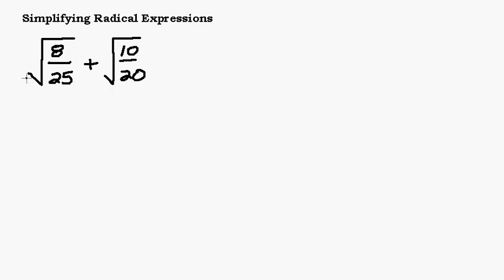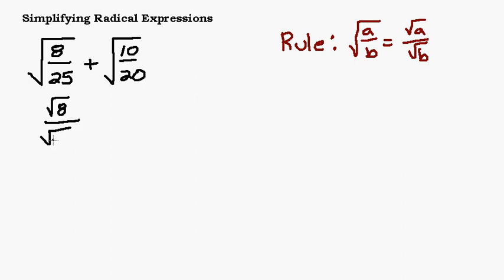Looking at the first one, I've got the square root of 8 over 25. That whole fraction is inside that square root. 8/25 doesn't reduce so that's not going to do me any good. Let's recall a rule: the square root of a over b is equivalent to the square root of a over the square root of b. I'm going to approach this as the square root of 8 over the square root of 25 and see what I can simplify.